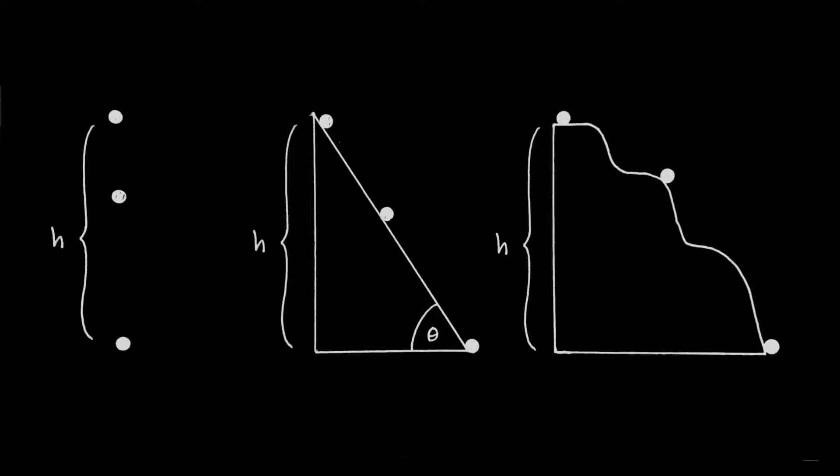In the middle case, I take the very same mass and allow it to slide down an incline at angle theta. The object is subject to more forces than just gravity, and the path it takes is different. The only thing that's the same is that it will have fallen the same height h.